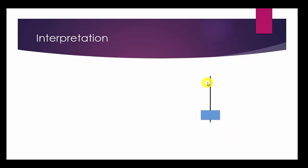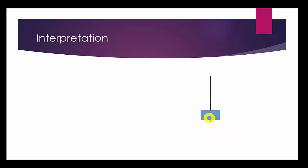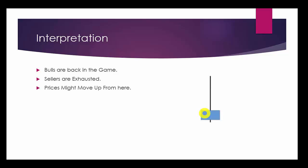After five to ten downward candles, the bulls have not allowed the sellers to push the market further downward — they have stopped the sellers. Bulls are trying to come back into the game and sellers are getting exhausted after the formation of this candlestick pattern. So bulls are back in the game, sellers are exhausted, and prices might go up from this level.